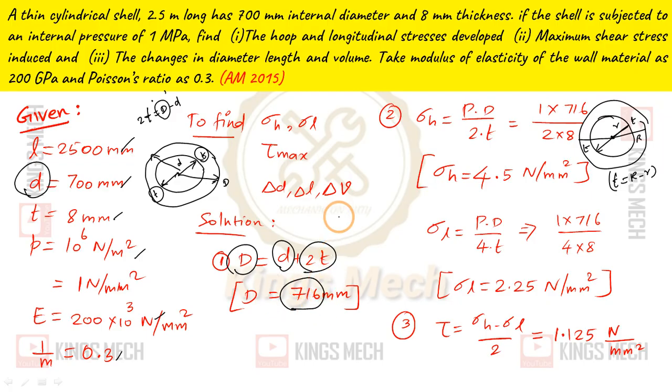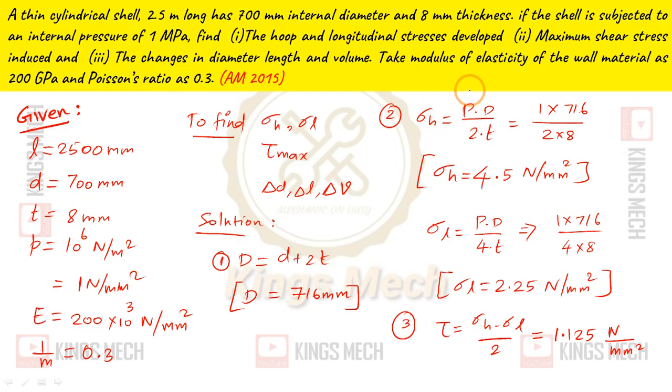700 plus 16 equals 716. But this step is a mandate for you. The usual method is, all formulas use capital D. So capital D equals 716mm. That's how we go. We have all the values. Hoop stress formula: PD by 2t. D equals 716.